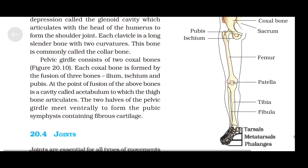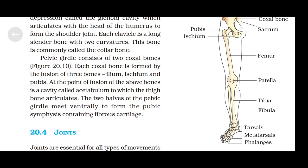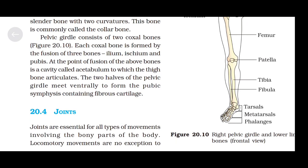The pelvic girdle consists of two coxal bones. Each coxal bone is formed by the fusion of three bones: ilium, ischium, and pubis. At the point of fusion of these bones is a cavity called the acetabulum, to which the thigh bone articulates. The two halves of the pelvic girdle meet ventrally to form the pubic symphysis containing fibrous cartilage.